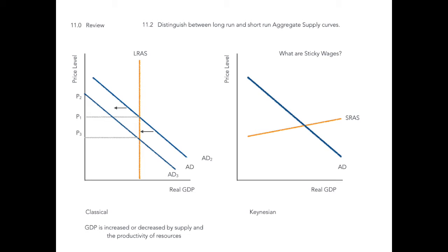Keynes observed that in the very short run, prices will not be affected by a drop in aggregate demand. While the pricing system is the mechanism that coordinates the activities in the economy and signals to producers the consumer's demands, prices do not instantly adjust. Businesses do not immediately drop their prices, workers do not immediately take lower-paying jobs, and resource suppliers will not accept lower compensation for their products. Keynes described prices in the very short run as being sticky.